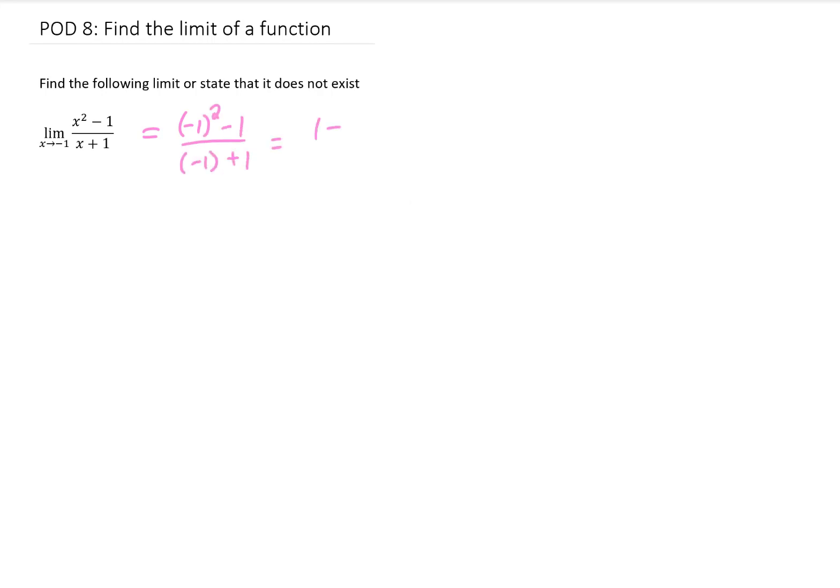Let's see, negative 1 squared is 1, so in the numerator we get 1 minus 1. In the denominator we get negative 1 plus 1. Unfortunately we get 0 over 0, which is an indeterminate form.